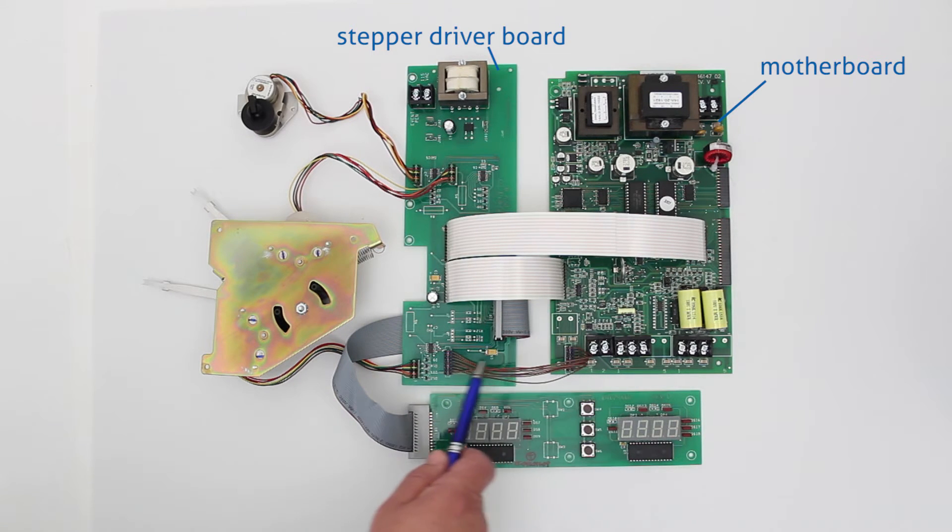Then we have our multi-conductor cable down here on the bottom, and here's our display cable that comes out of the backside of the stepper driver board and comes over and goes into the side of the display board, which would be located in the front door.